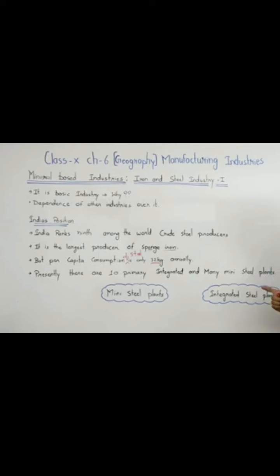India ranks ninth among the world's crude steel producers and is the largest producer of sponge iron — a porous form of iron in its raw form. However, per capita consumption of steel is only 12 kg annually, which is very low compared to other countries.